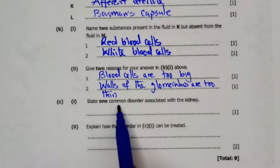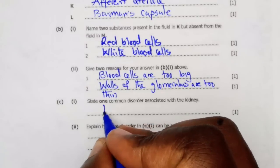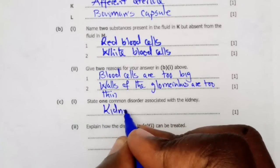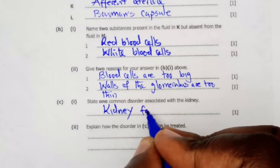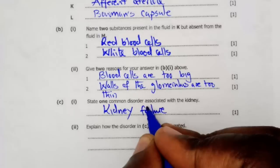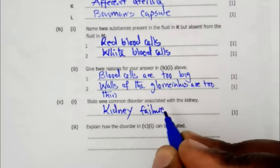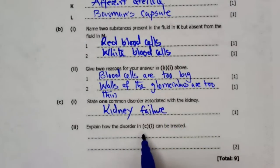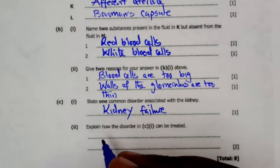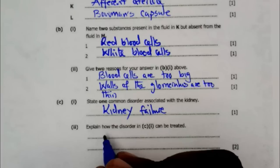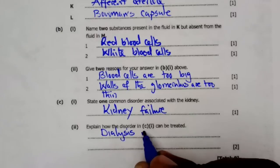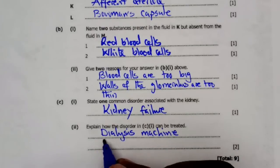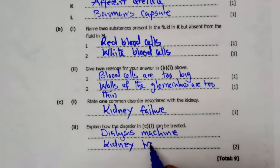C1: State one common disorder associated with the kidney. One of the common disorders we have is kidney failure. We can also have kidney stones but we will simply write kidney failure. C2: Explain how the disorder in C1 can be treated. Kidney failure can be treated by using a dialysis machine or kidney transplant. These were the solutions to question number 4.